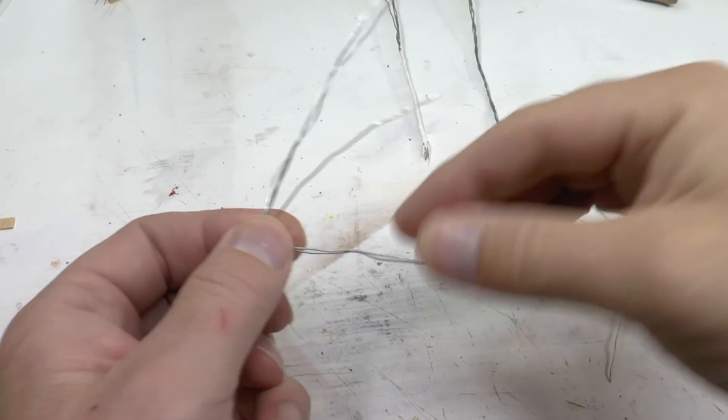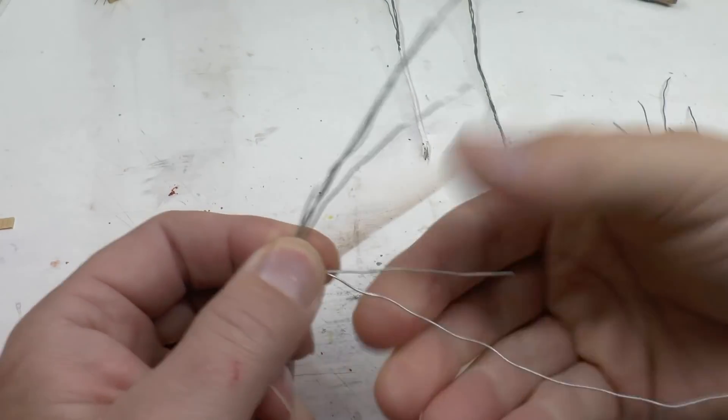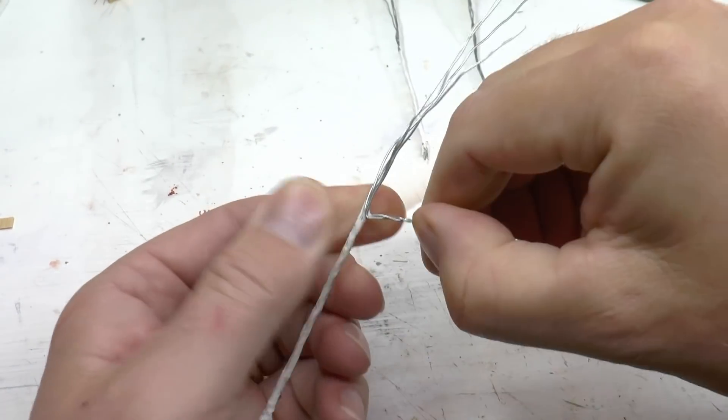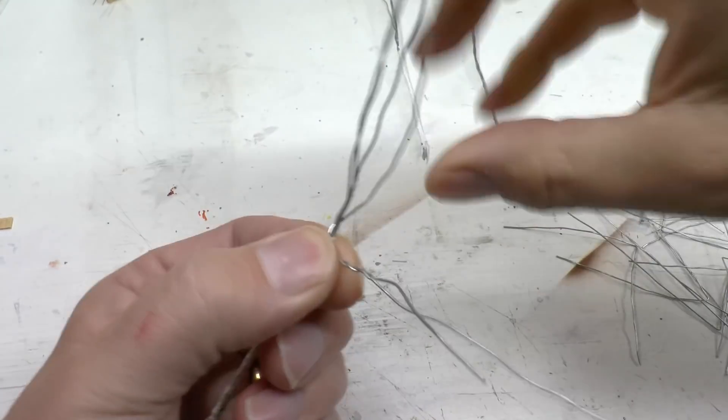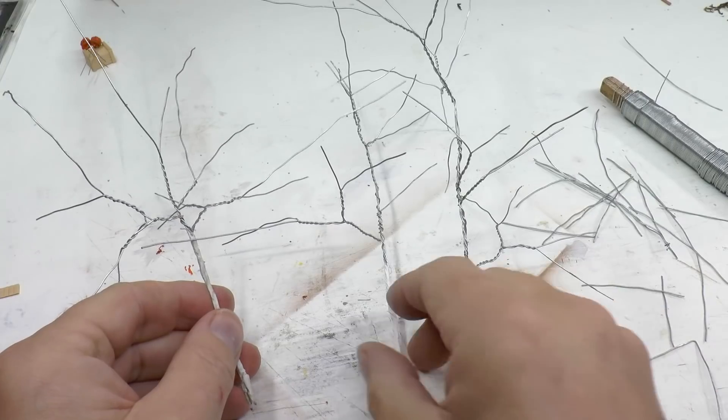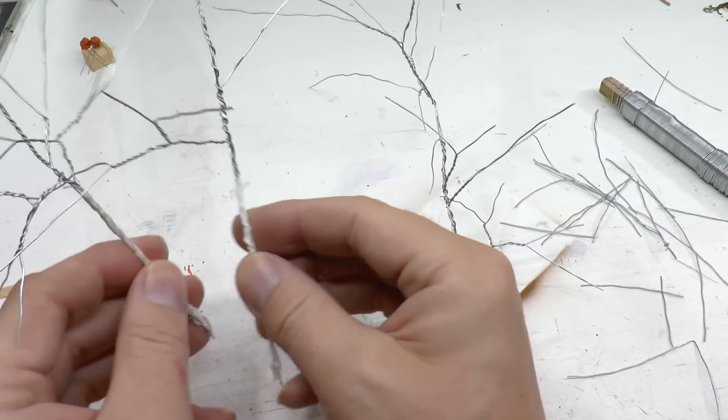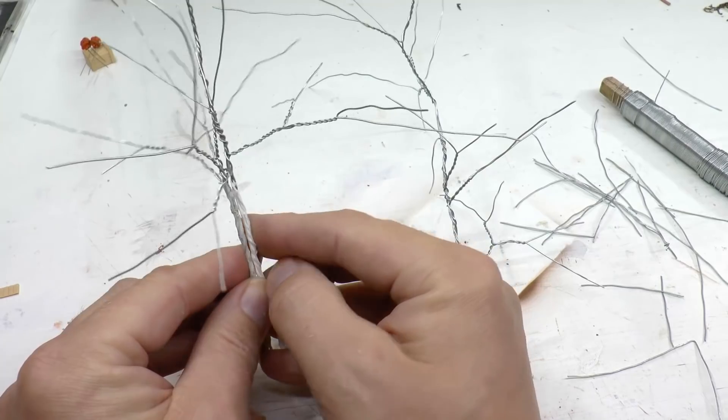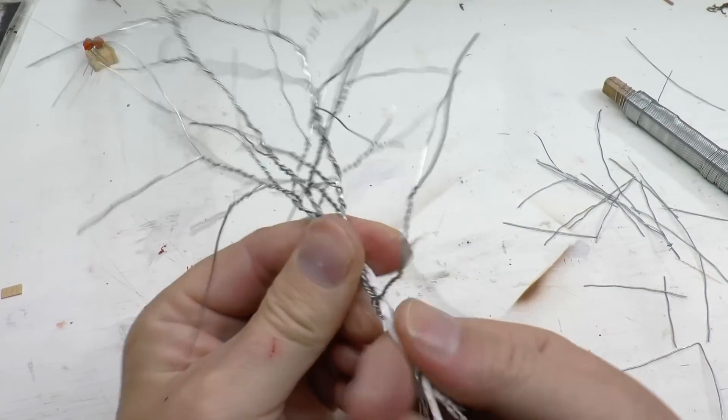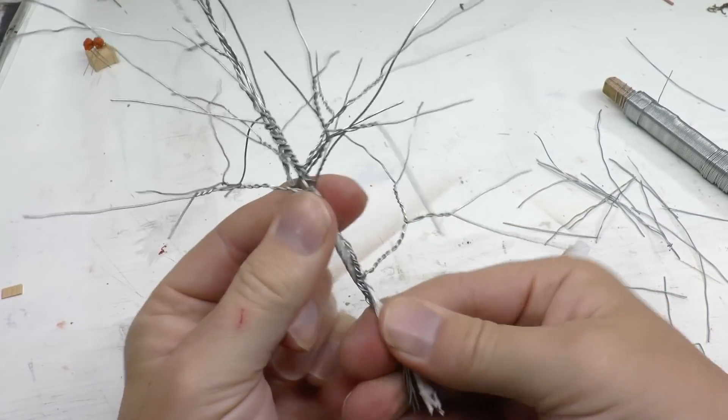When making bigger trees like this, like an oak or like this one, I prefer to make three or four smaller trees. You know I make them tall but thin, consists only from four wires each.